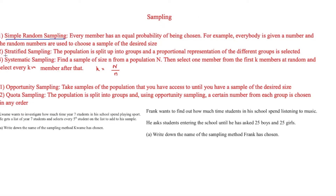The next is stratified sampling, where the population is split into groups and proportional representation of the different groups is selected. For example, if splitting by age, you might have 20 students aged 18 to 25 but only 4 aged 60 to 65, so you would take a proportionally higher number of 18 to 25 year olds in your sample.